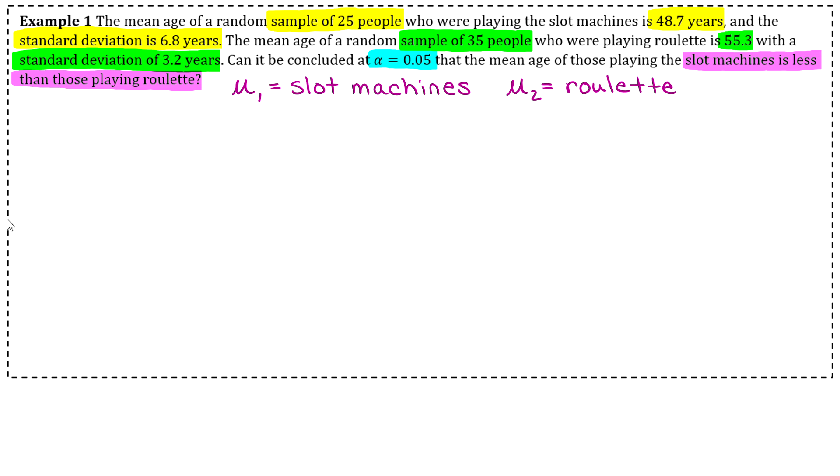Okay, so step one, we're going to state our hypotheses. So our null hypothesis is always going to be that mu1 equals mu2. Okay, and then we'll just look at what the actual claim is. So can it be concluded that the mean age of those playing slot machines is less than those playing roulette? Okay, so our alternative hypothesis, we can represent slot machines is less than roulette by writing mu1 is less than mu2. And of course, you want to identify that as your claim. So you write that down.